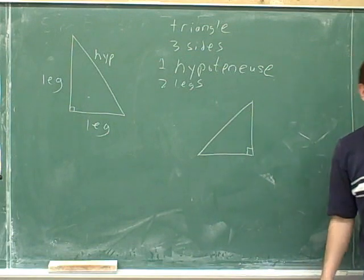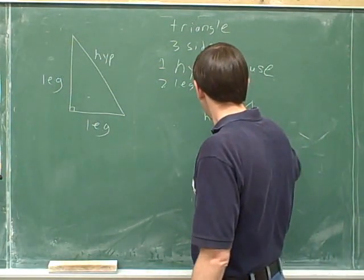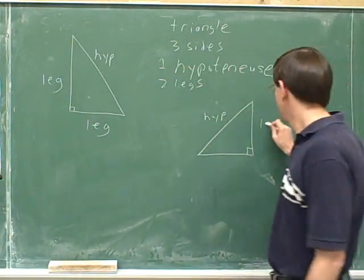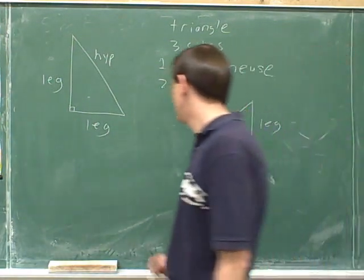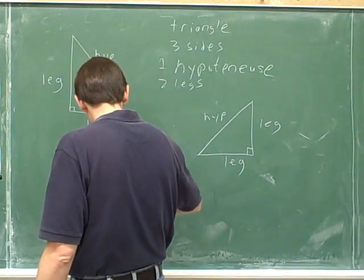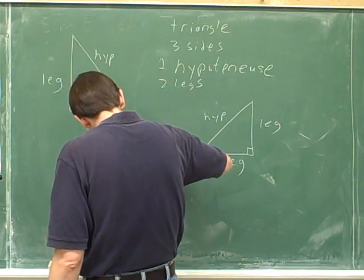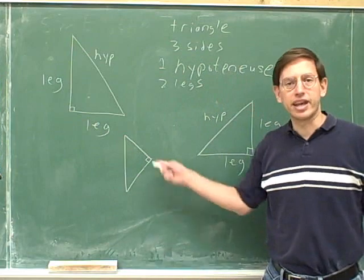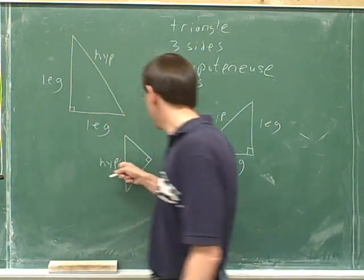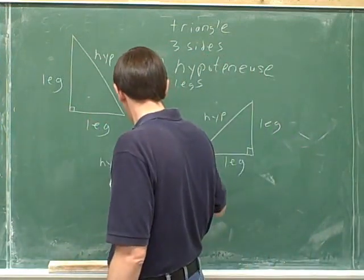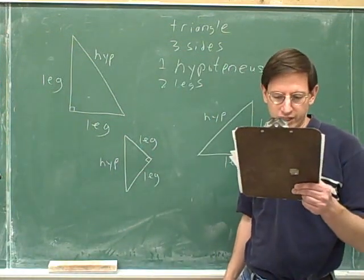Label the hypotenuse and legs of these triangles. The hypotenuse is opposite the 90 degree angle, and the two legs are adjacent to the 90 degree angle. You can see that in all these triangles, the hypotenuse really is the longest side.